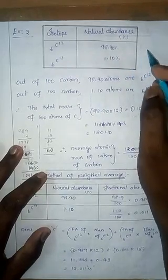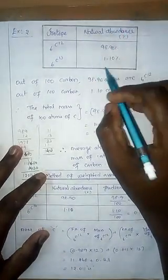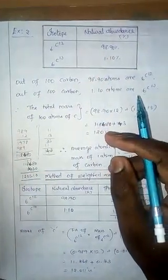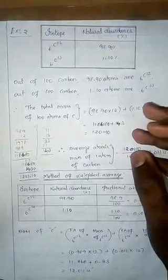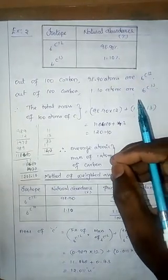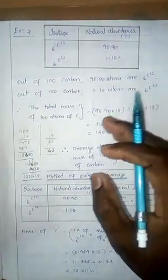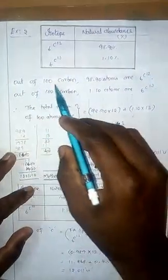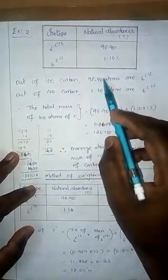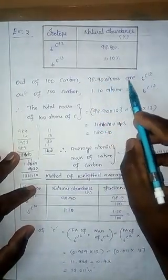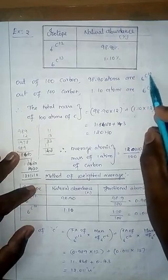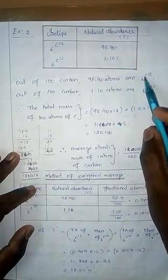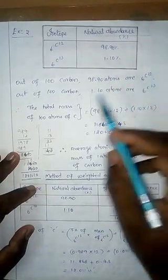So what does natural abundance inform us? If you collect carbon from any source, we collect hundred carbon atoms from any source - we call sampling. Out of every hundred carbons, ninety eight point nine percent will be the atom of six carbon twelve. So ninety eight point nine zero atoms of six carbon twelve.